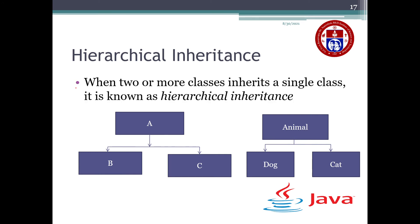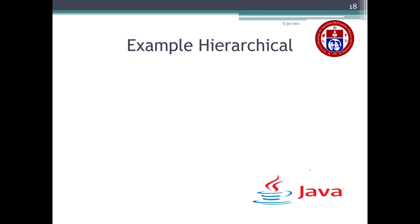Next, what is hierarchical inheritance? When two or more classes inherit a single class, then it is known as hierarchical inheritance. Here A is the parent class and there are two derived classes B and C — both classes inherit from A. An example: Animal is the parent class and Dog and Cat are the derived classes.